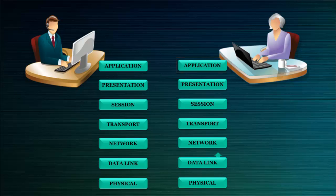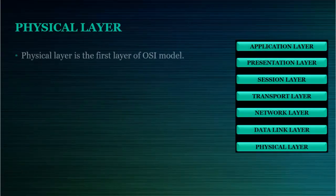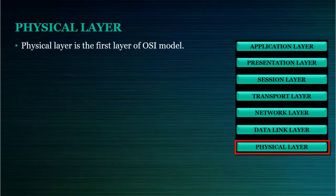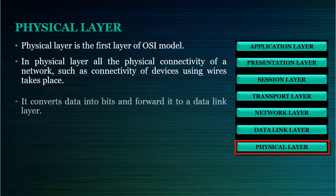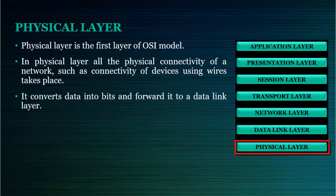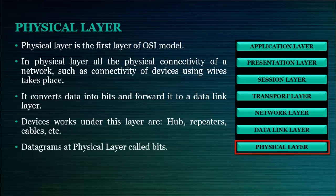Let's discuss about each layer in detail. Physical layer is the first layer of OSI Model. In the physical layer, all the physical connectivities of a network — such as connectivity of a device using wires — take place. It converts data into bits and forwards it to the data link layer. Devices that work under this layer are hub, repeaters, cables, etc. The datagram at the physical layer is called bits.